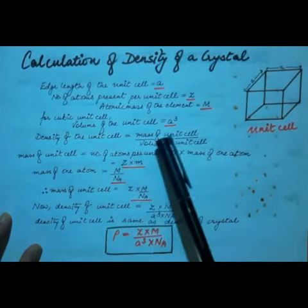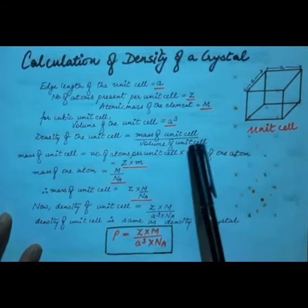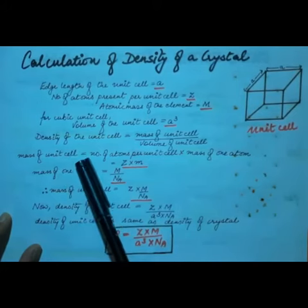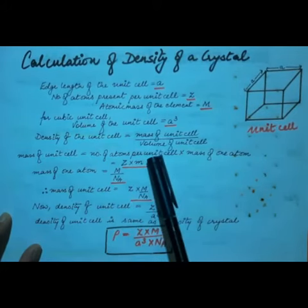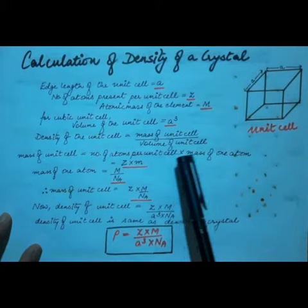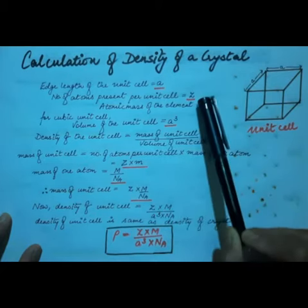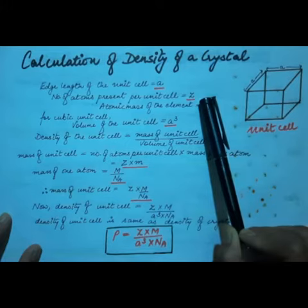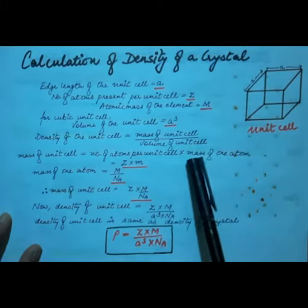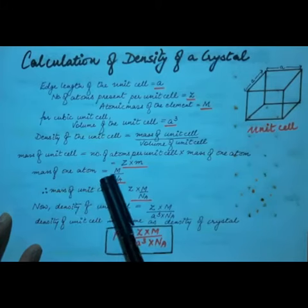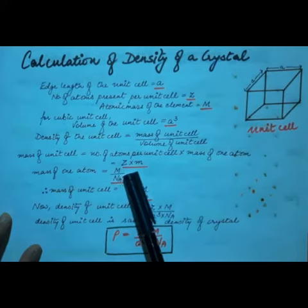Density of the unit cell is equal to mass of unit cell divided by volume of unit cell. The mass of unit cell will be equal to the number of atoms present in the unit cell multiplied by the mass of one atom. We know the number of atoms present in the unit cell is equal to z, but we don't know the mass of one atom. So in order to calculate the mass of one atom, we use the relation: mass of one atom is equal to the atomic mass of the element divided by Avogadro's number.